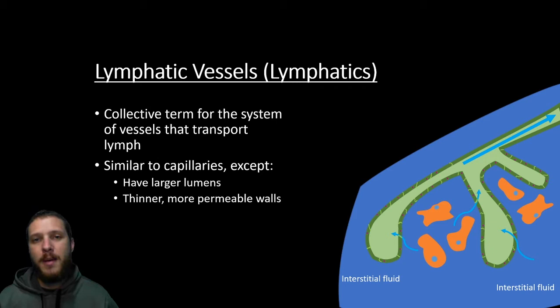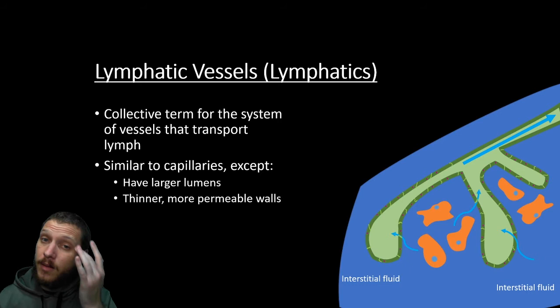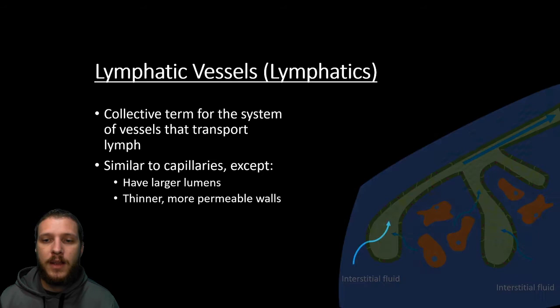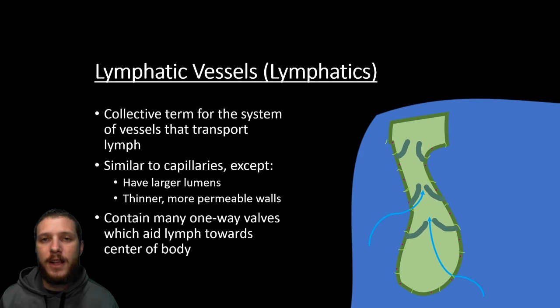Lymphatic vessels, also known as lymphatics, is the collective term for the system of vessels that transport lymph back up the body and into the cardiovascular system. They're similar to capillaries, except they have larger lumens to hold more fluid and even thinner, more permeable walls, so water can get in easily and white blood cells can get in and out to reach areas of infection. Similar to veins, there are one-way valves. Because we have to get lymph back up above the heart, these valves prevent fluid from pulling back down — if they don't work, that's when you get edema.